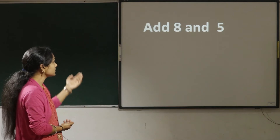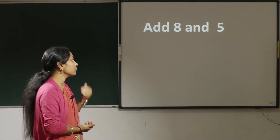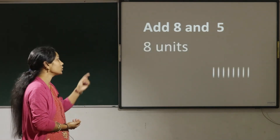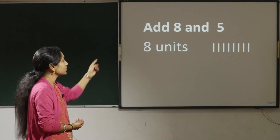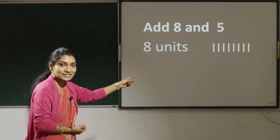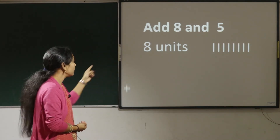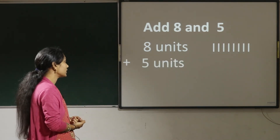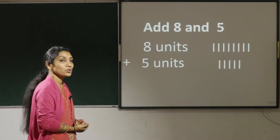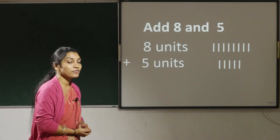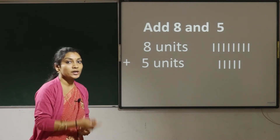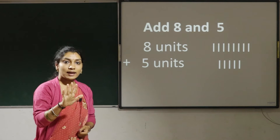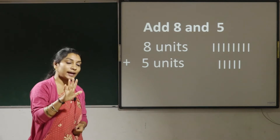Next, add 8 and 5. 8 units — there are 8 sticks — plus 5 units, 5 sticks. So 8 plus 5, how much? 8 in the mind, 5 in the hand.